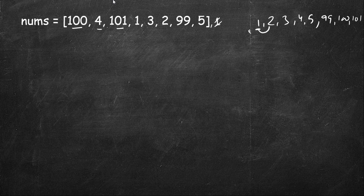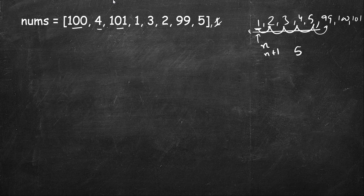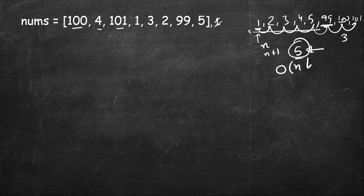Starting at 1, keep incrementing the count while the next number is n+1. We get a count of 5 here, then keep track of the current best which is 5. Then start a new sequence at 99, finding next as 100 and then 101 — count is 3. Between 5 and 3, 5 is the maximum. However, sorting takes O(n log n) time, so this does not serve our purpose of O(n).